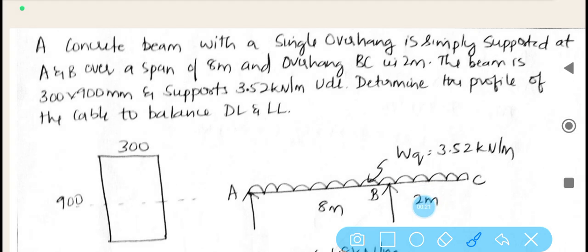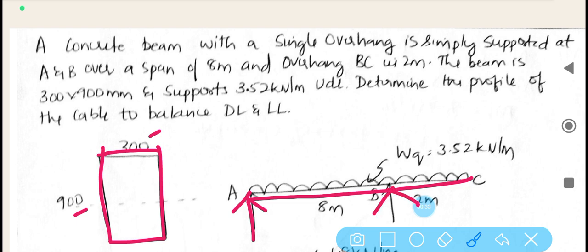Let us draw the sketch. It is a rectangular cross section 300 by 900 as given, and we need to draw the beam. This is point A is supported, point B is supported as given in the data. It is simply supported at A and B. Therefore at point A there is a support, at point B there is a support.